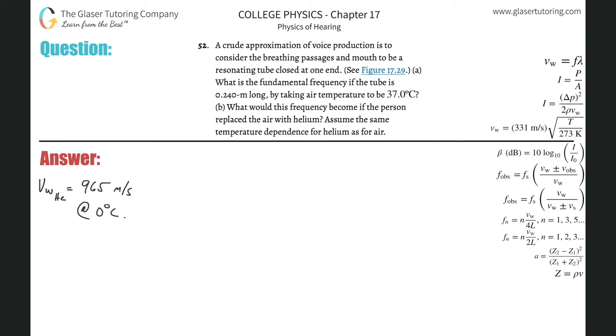Number 52, a crude approximation of voice production is to consider the breathing passages and mouth to be a resonating tube closed at one end. Letter A, what is the fundamental frequency if the tube is 0.24 meters long, taking air temperature to be 37 degrees Celsius?